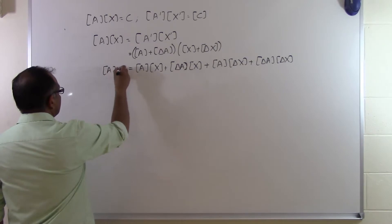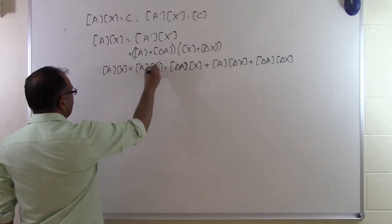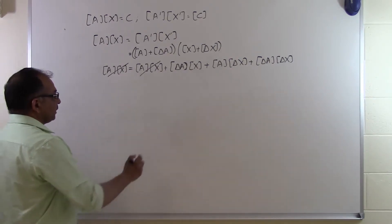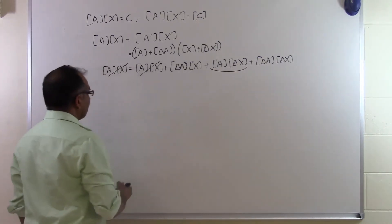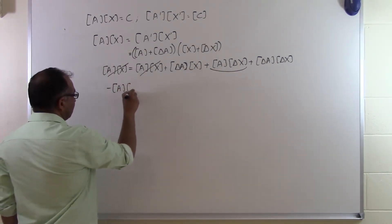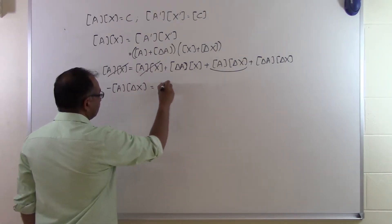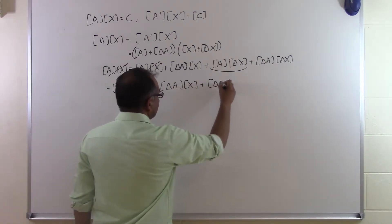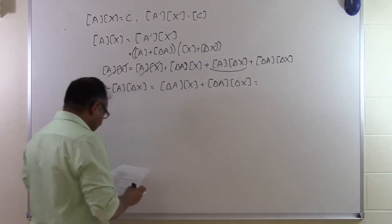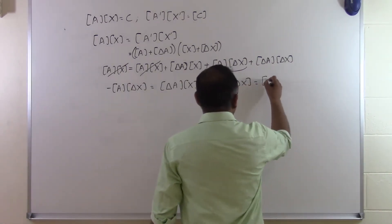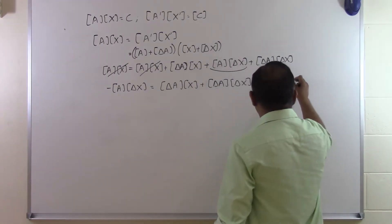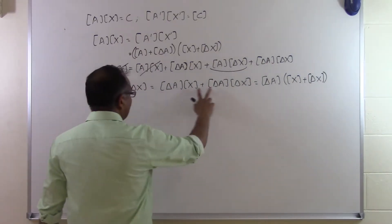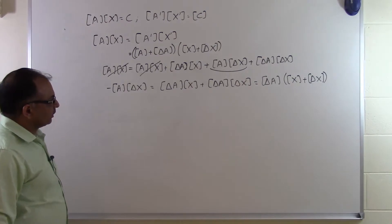We are basically expanding the multiplication of these two matrices. Since A times X appears on both sides, it cancels out. Bringing the A times delta X term to the left-hand side gives minus A times delta X, which equals delta A times X plus delta A times delta X. We factor out delta A to get delta A times the quantity (X plus delta X).